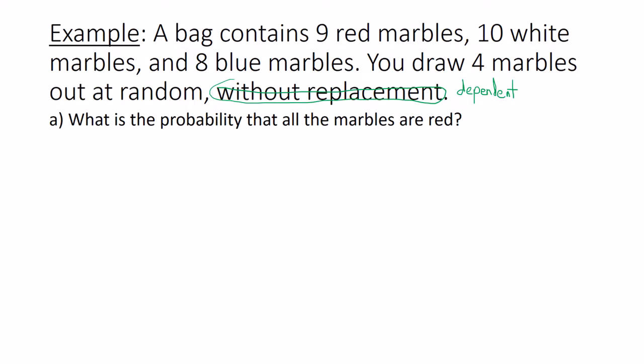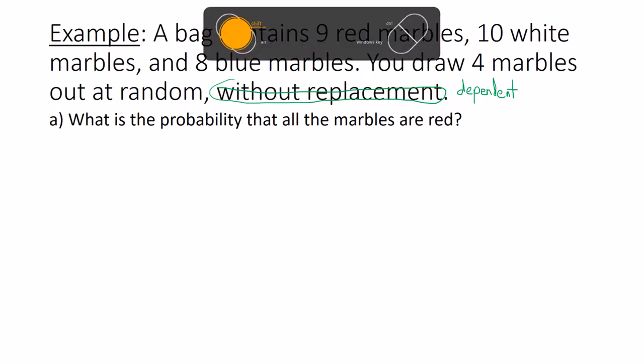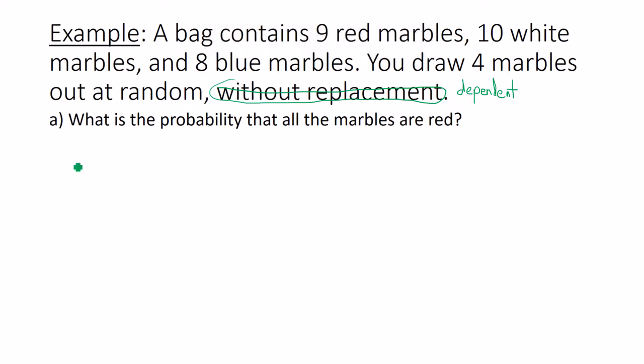So what is the probability that all marbles are red? Well the probability all marbles are red. So first drawing, I get a red marble. Second drawing, I get a red marble. Third drawing, I get a red marble. Fourth drawing, I get a red marble. I am going to calculate each of these probabilities and then multiply them together. Remember, this is being done without replacement. So the total number of marbles I have will decrease by 1 each time.